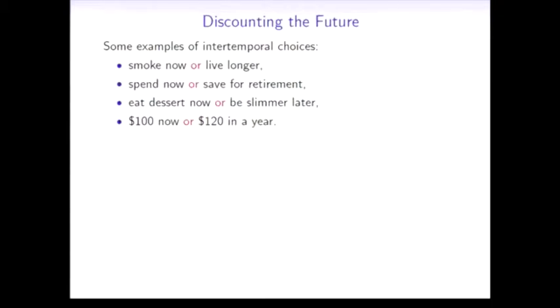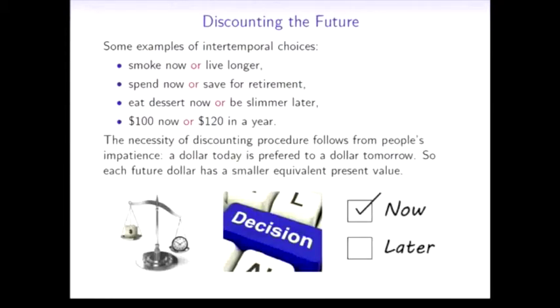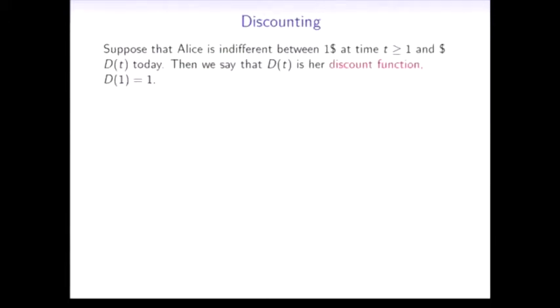Finally, have $100 now or $120 in a year. How do people compare costs and benefits which occur in different periods of time? Most people are impatient and always prefer to have $1 today rather than $1 tomorrow, which means that each future dollar has a smaller equivalent present value. Hence the term discounting.